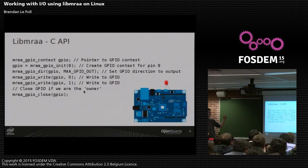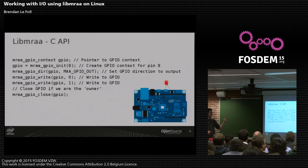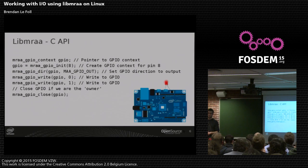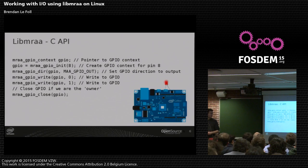A C API looks kind of like this. So instead of objects, we have context. You initialize a context, then in this case you set a direction, then you can write whatever you want to it. If you are the owner, you will close the context. You can say you don't want to be the owner and it will just leave it open for whatever you want — we do that with an extra call in C, and in C++ and SWIG you have an optional parameter on your constructor.